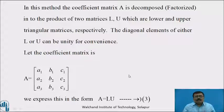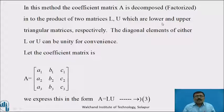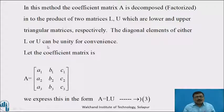In this method, the coefficient matrix A is decomposed or factorized into the product of two matrices L and U, which are the lower and upper triangular matrices respectively. The diagonal elements of either L or U can be unity for convenience.